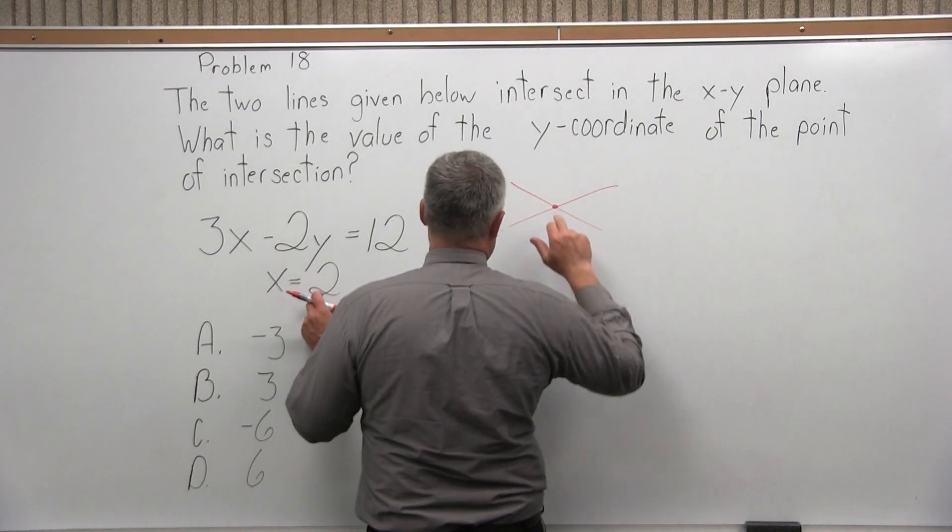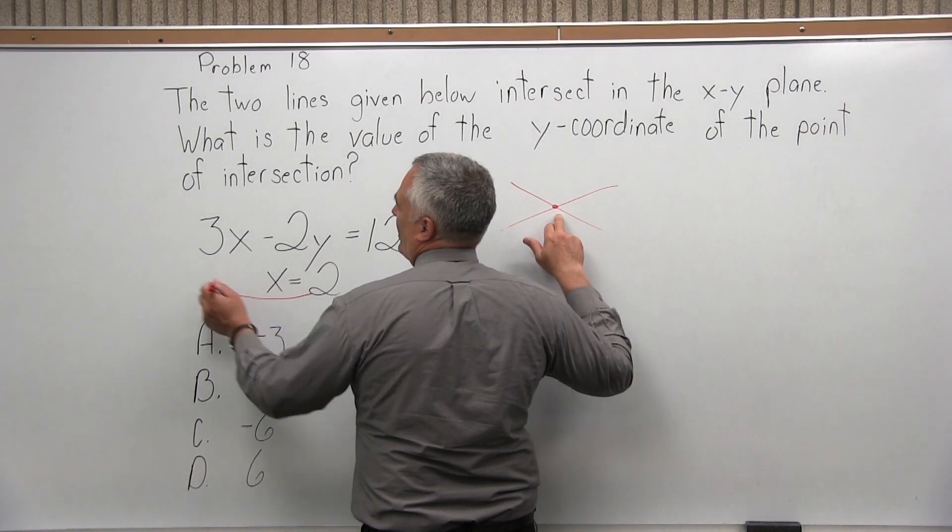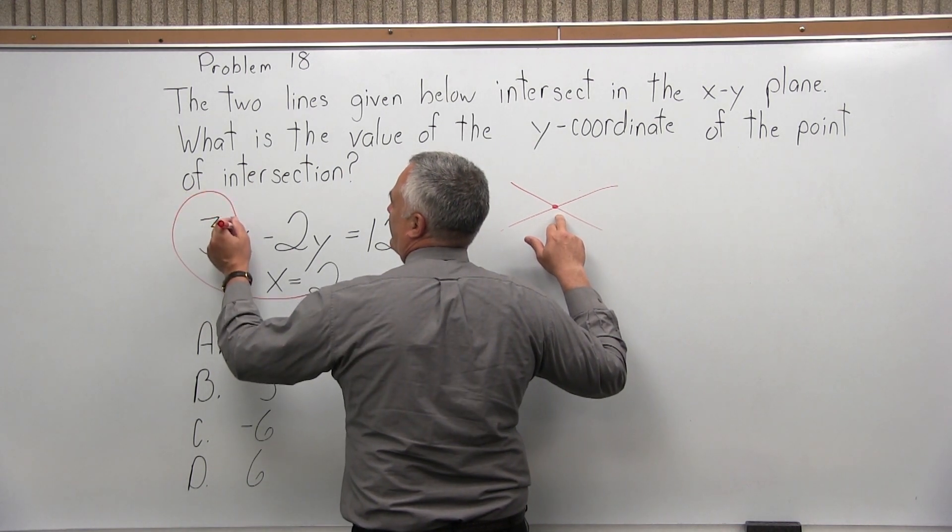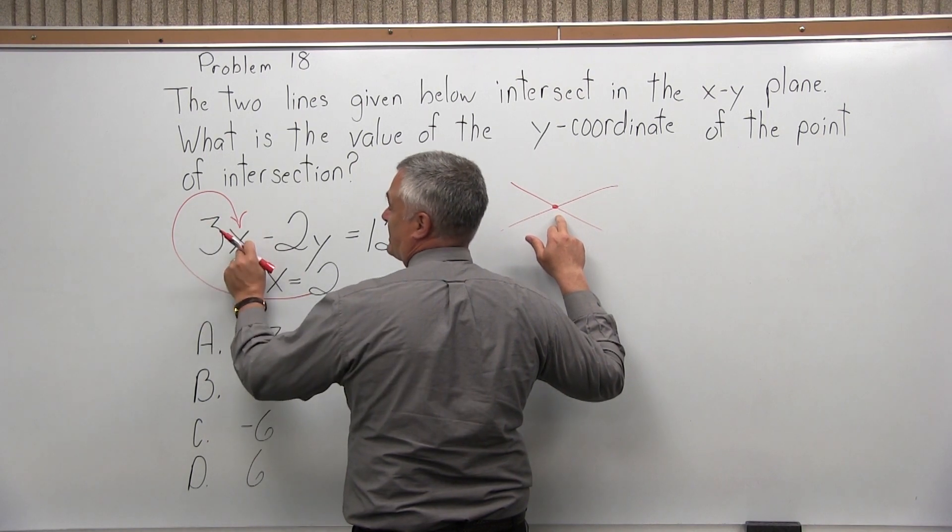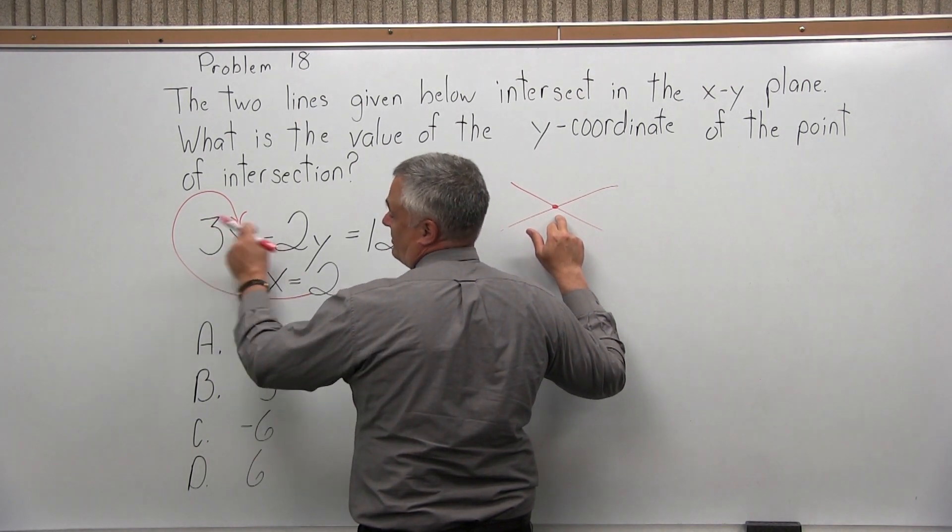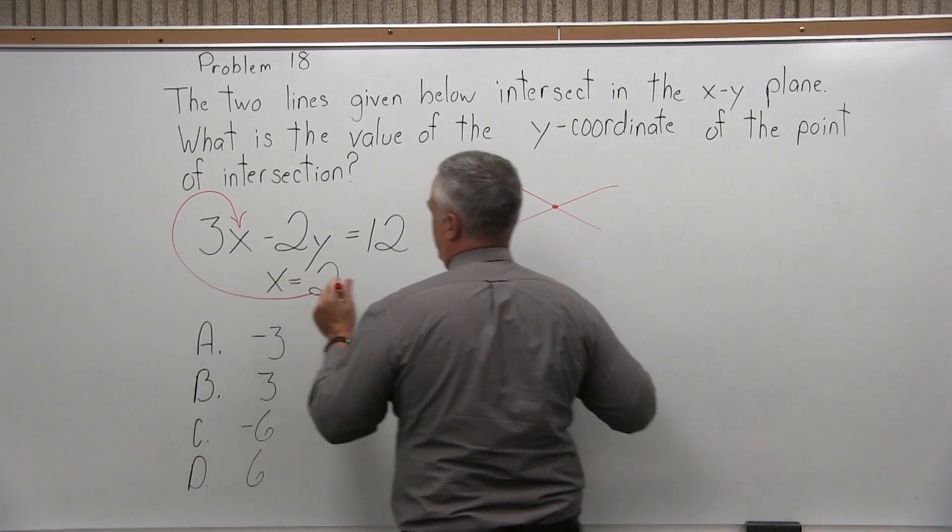If you know that x is always 2, and they're going to intersect somewhere, the value of the x-coordinate at that point of intersection on the first line would be 2. So I can take that 2 for x and put it in for x in the first linear equation. 3 times x becomes 3 times 2.